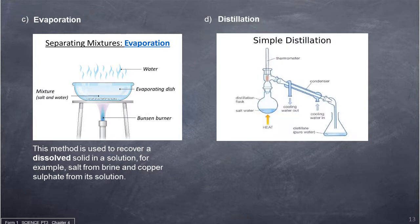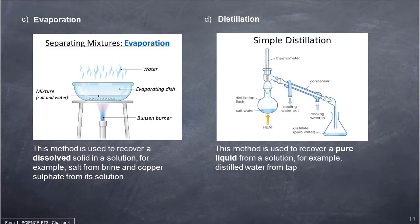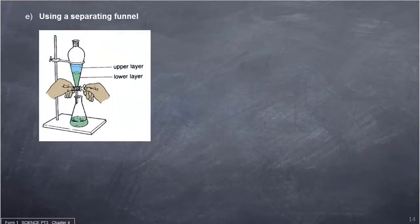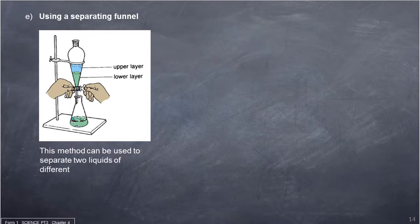Distillation is used to recover a pure liquid from a solution, for example distilled water from tap water and petroleum fractions from crude oil. Using a separating funnel can be used to separate two liquids of different densities.